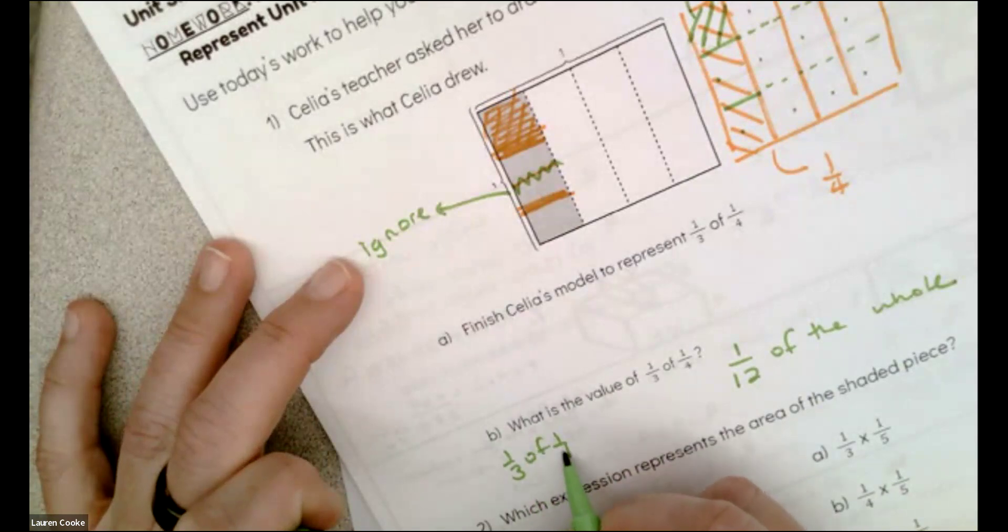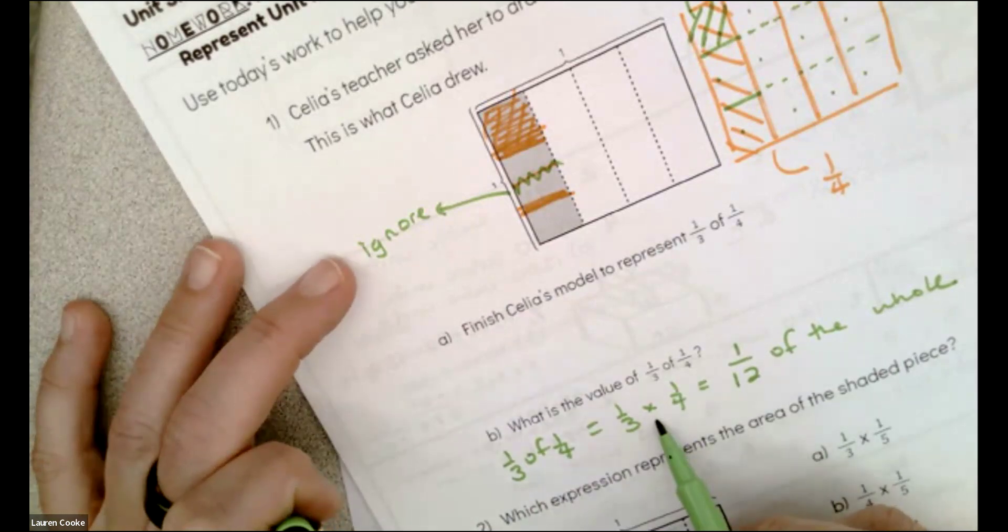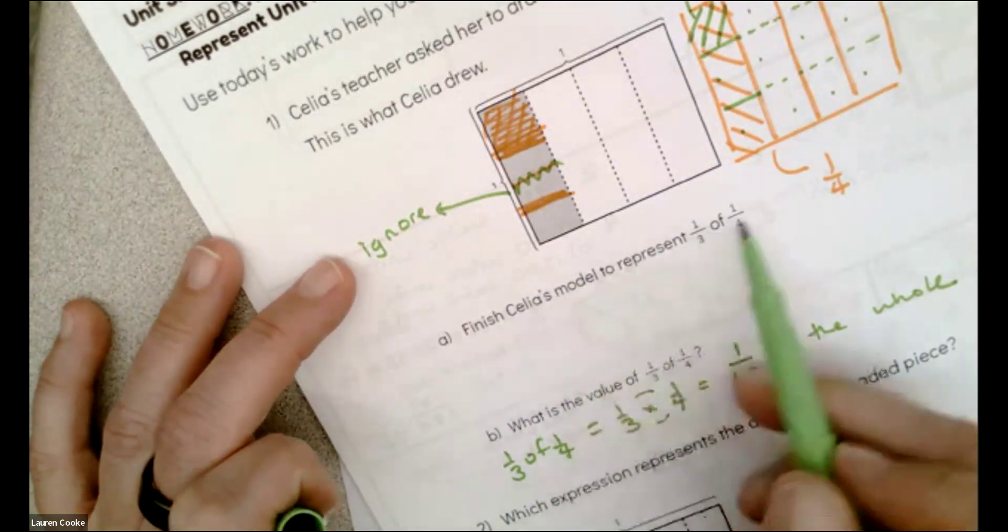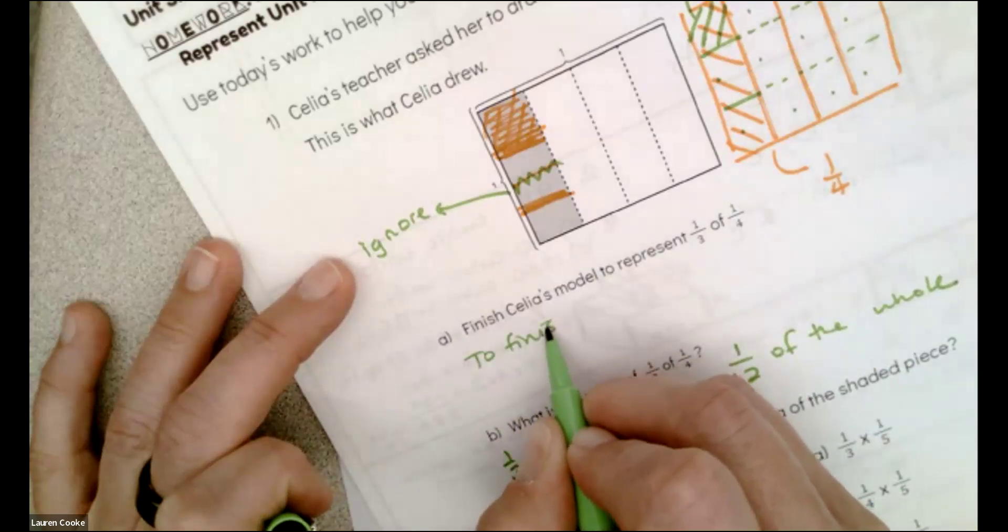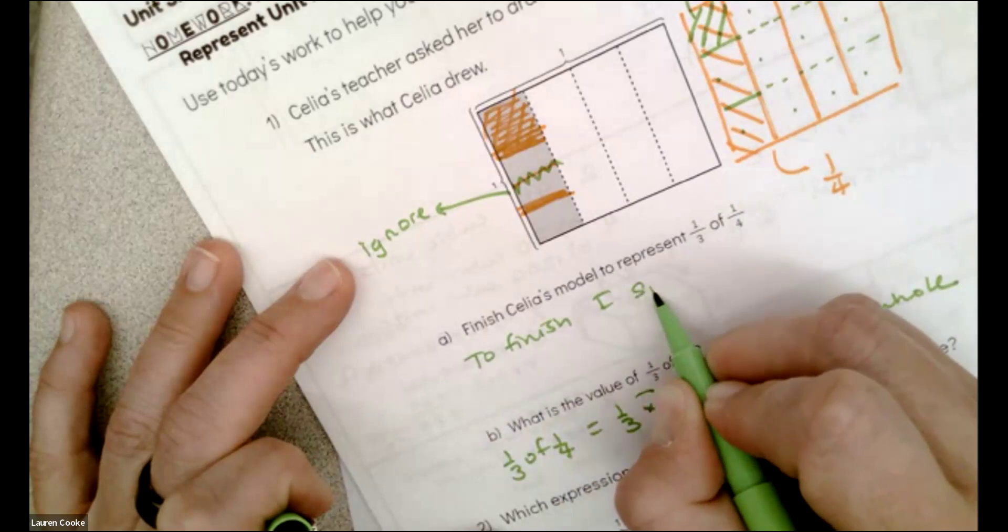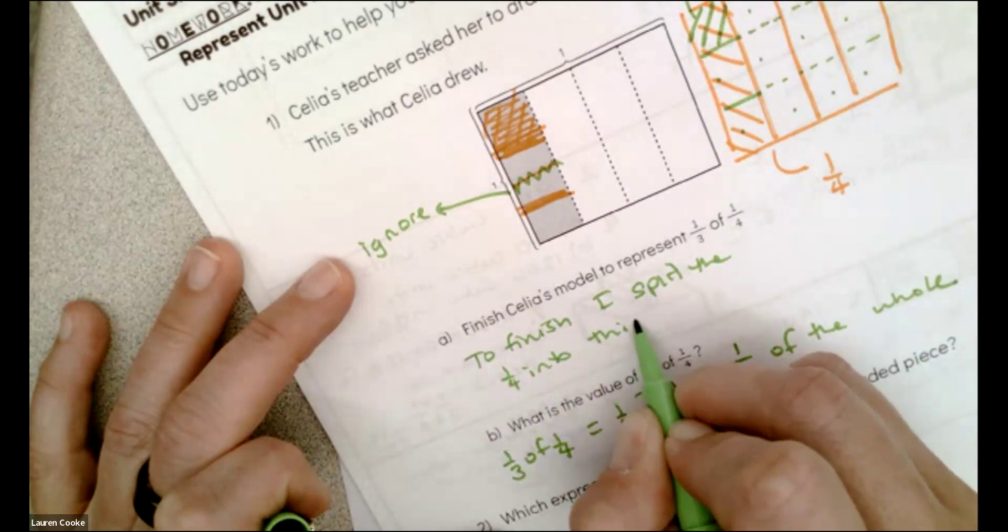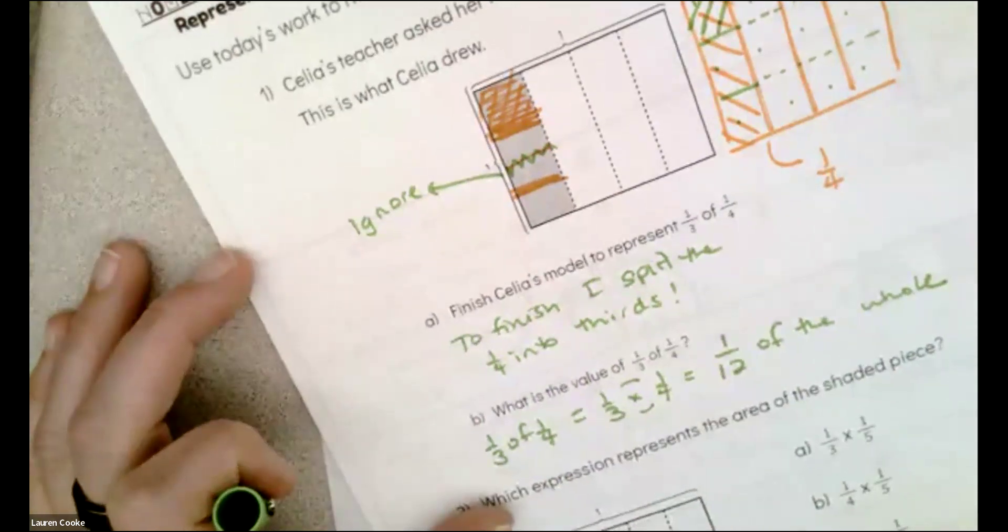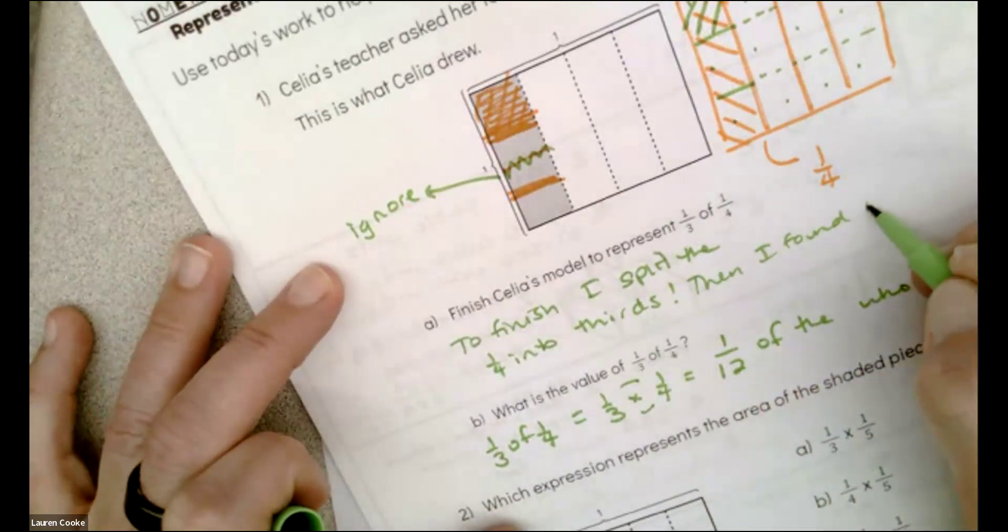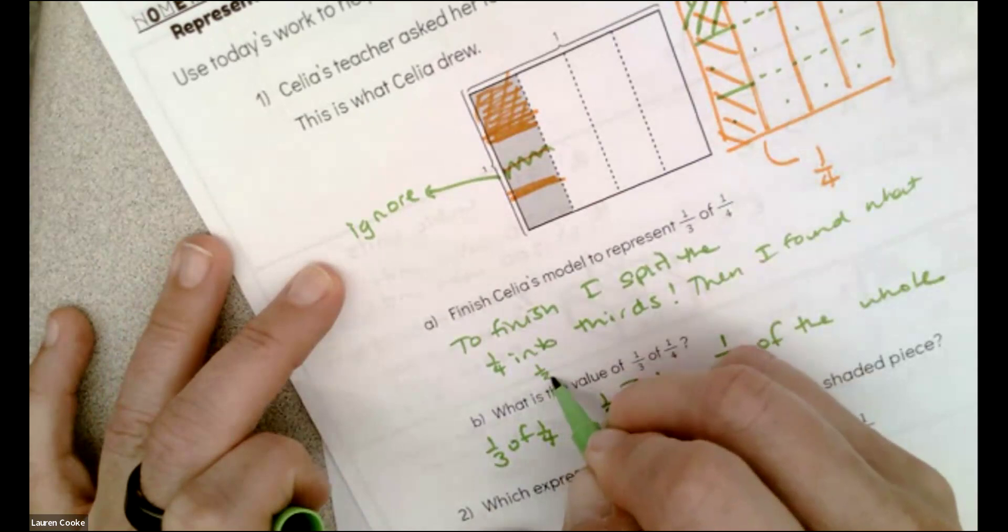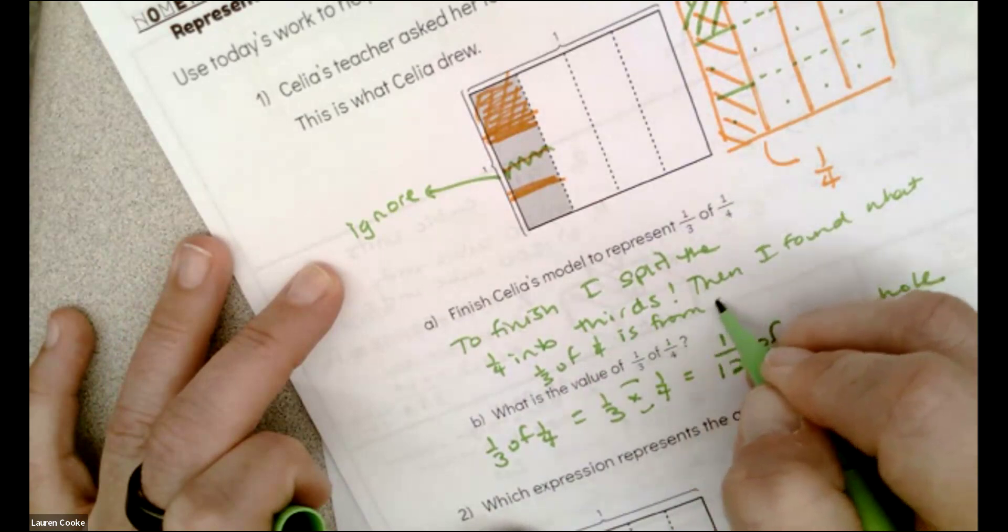One-third of one-fourth equals one-third times one-fourth, and that equals one-twelfth. I'm sure you can see a pattern here, but let's just write what we did here. Finish Celia's model. To finish, I split the one-fourth into thirds, and then I found one-third of it. Then I found what one-third of one-fourth is from a whole.